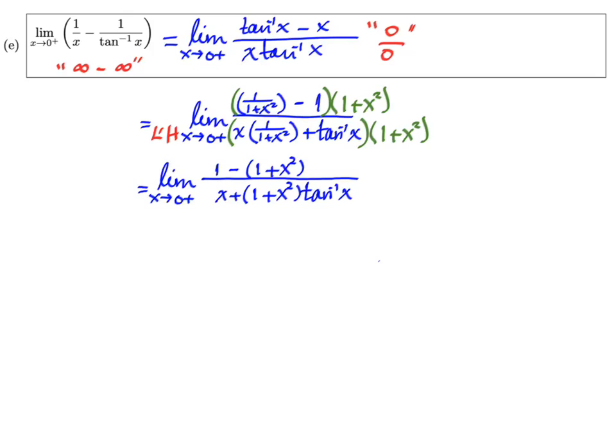And it looks like I can clean up the numerator a tiny bit, so let's call this limit x approaches zero from the right of just -x² over x + (1+x²) times tan⁻¹x.